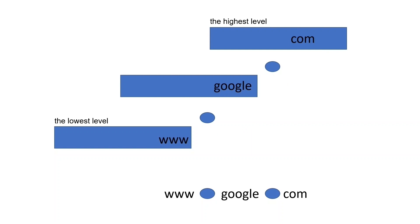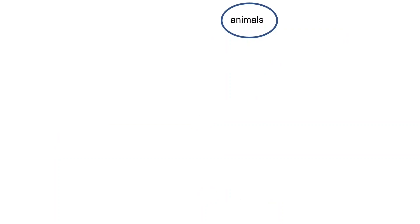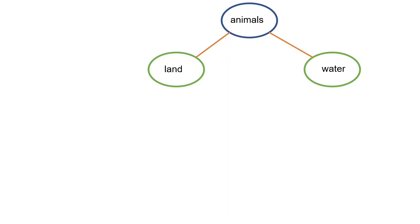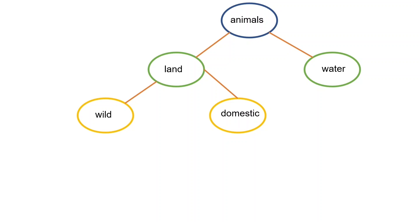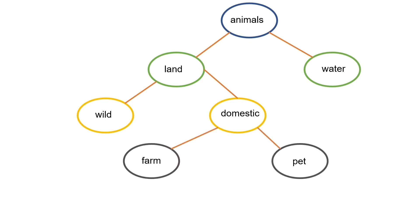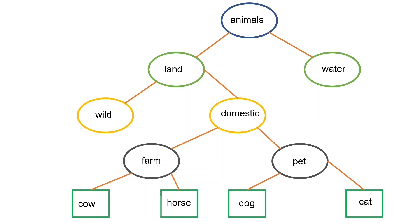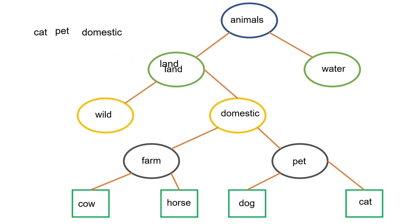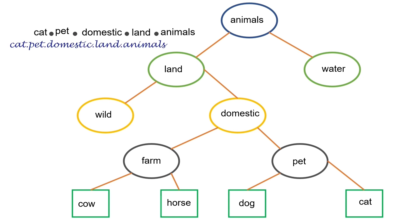Let's take an example to understand this. Suppose we want to build and organize an animals database. We keep animals at the top of the hierarchy, then divide animals into land and water. We further divide land animals into wild and domestic, and domestic into farm and pet. Under these levels, we add animal names. To write the cat's full name in this database, we write cat, then pet (its parent), then domestic, then land, then animals, separating each with dots. The cat's full name becomes cat.pet.domestic.land.animals.